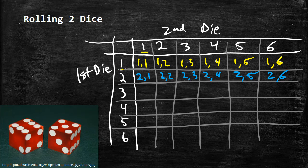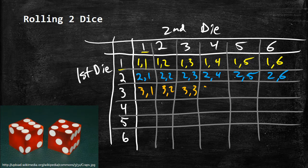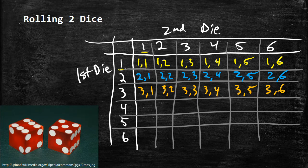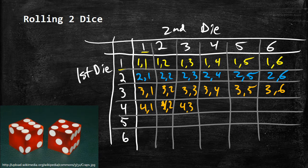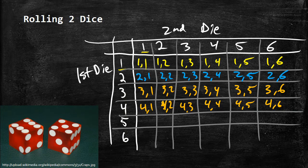Eventually we're going to have this whole table filled out with all the possible outcomes, our sample space for this particular probability experiment.